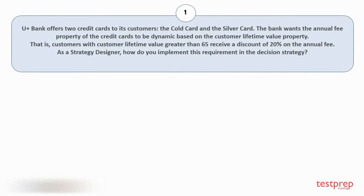Question number one: UPlus Bank offers two credit cards to its customers — the Gold Card and the Silver Card. The bank wants the annual fee property of the credit cards to be dynamic based on the customer lifetime value property. That is, customers with customer lifetime value greater than 65 receive a discount of 20% on the annual fee. As a strategy designer, how do you implement this requirement in the decision strategy?